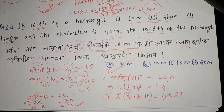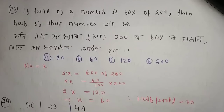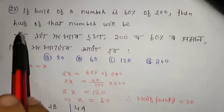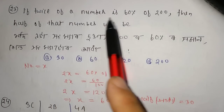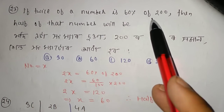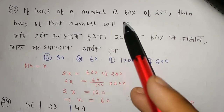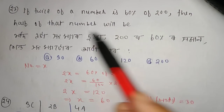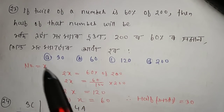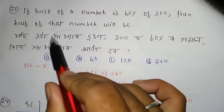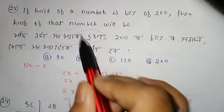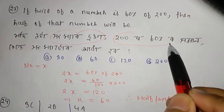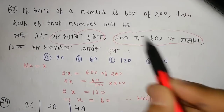The next question: if twice of a number is 60% of 200, then half of that number will be. So if you look at this, it's 2x.